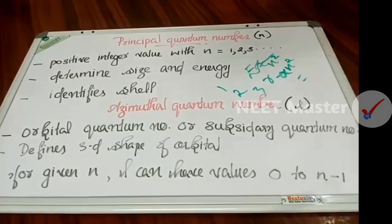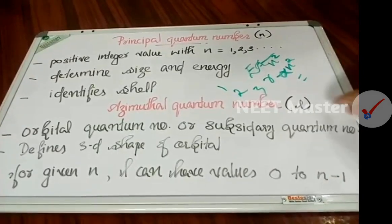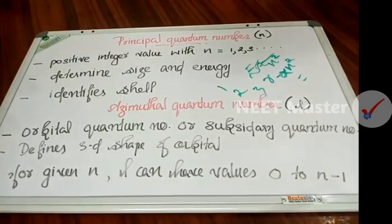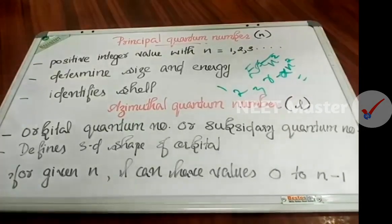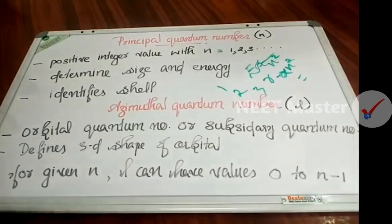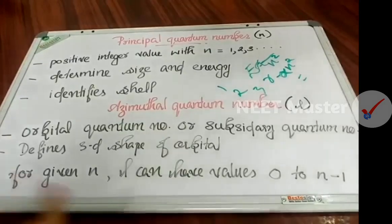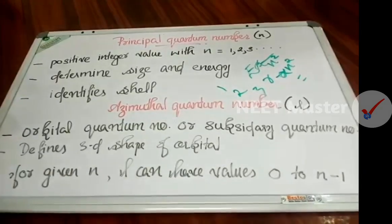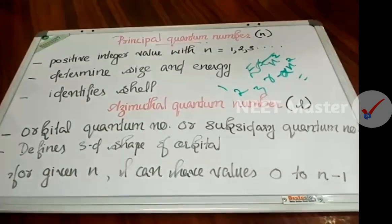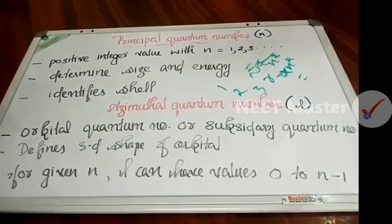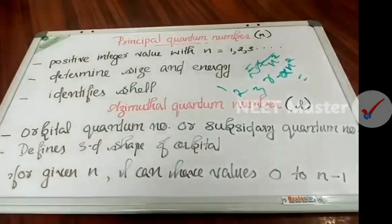Next, we can represent the azimuthal quantum number. The next quantum number is the Orbital or Azimuthal Quantum Number. If you have an orbital, you can use it as an azimuthal quantum number, also called the subsidiary quantum number.